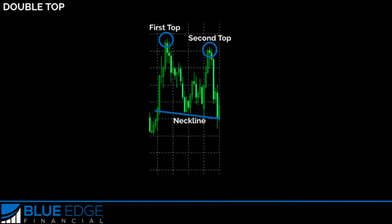The tops of the pattern are peaks which are formed when the price hits a certain price level that continues to act as resistance and can't be broken. Basically it's a double top because the price will hit this resistance level once, bounce off, and then return back and hit that resistance level again and bounce off again. You can see here that the market went up, hit right here, bounced off, came down, went back up, hit here for the second top.